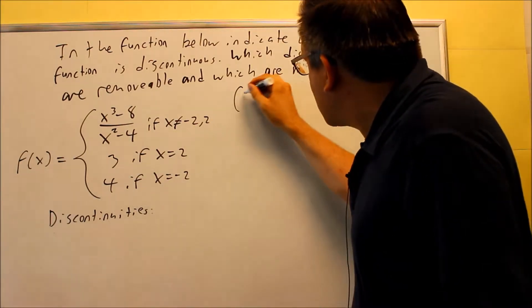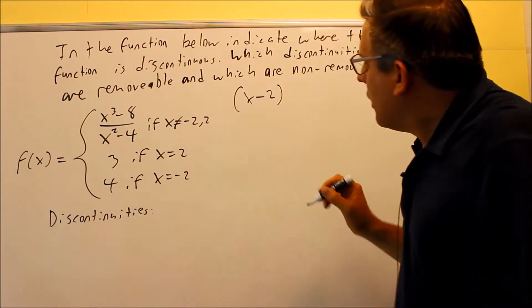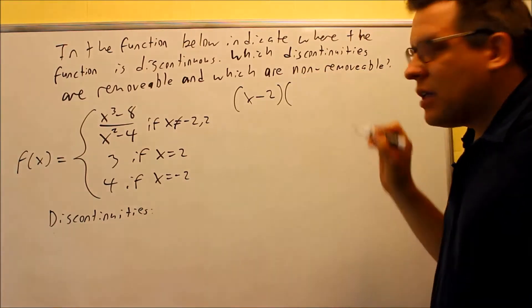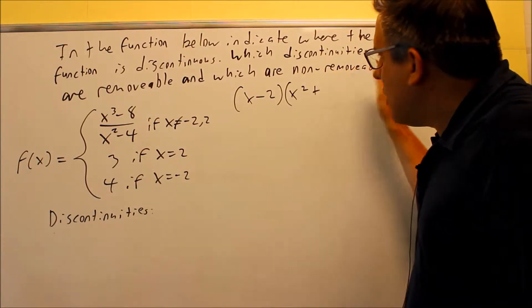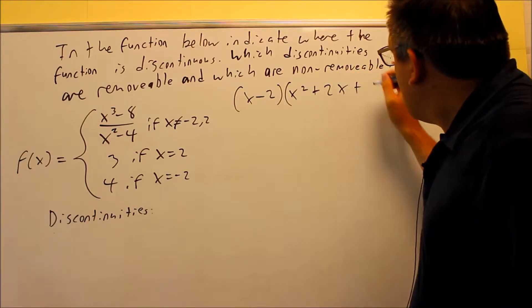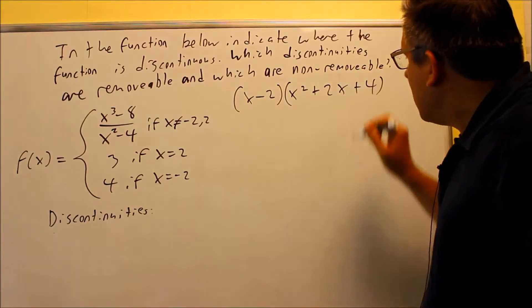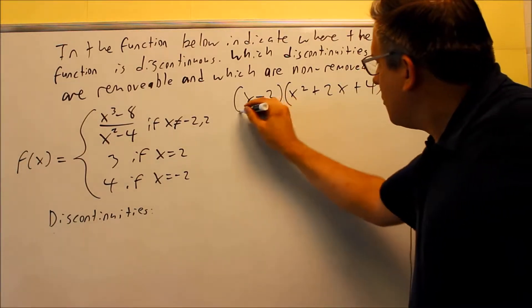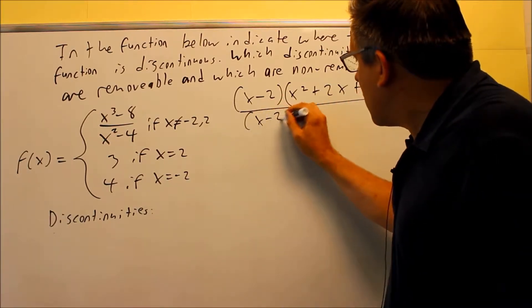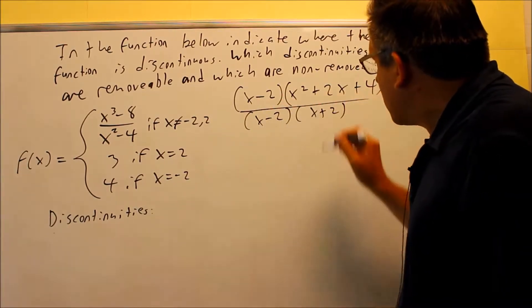When you use the formula, it's going to be x minus 2, and then you're going to do a squared, which is x squared, plus ab, which is plus 2x, and then plus b squared, which is going to be a 4. On the bottom, we have the difference of squares, x minus 2, x plus 2.